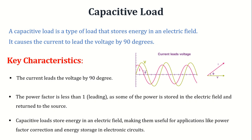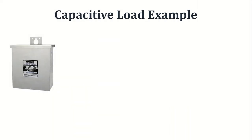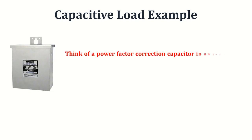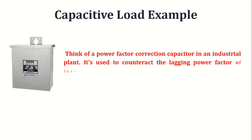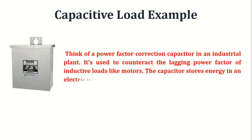Examples include capacitors, power factor correction devices, and electronic circuits. Think of a power factor correction capacitor in an industrial plant. It's used to counteract the lagging power factor of inductive loads like motors. The capacitor stores energy in an electric field, causing the current to lead the voltage.